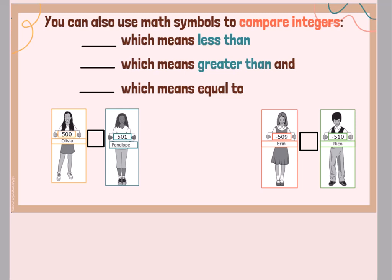Okay, we could also use math symbols to compare our integers. So do you remember your inequality symbols? This means less than. This is our greater than symbol. And then, of course, our equal to sign. So if we take a look, Olivia has the number 500. Penelope has the number 501. Which one is greater? Penelope. 501 is greater than 500. So I would say that Olivia is less than Penelope. You can also, in elementary school, you probably had a teacher who talked about the alligator. The alligator's mouth is open to the larger number because it's hungry and it wants to eat the larger number. So you could think about it that way. 501 is larger. So my alligator's mouth is going to be open to eat the 501.